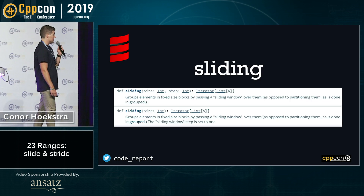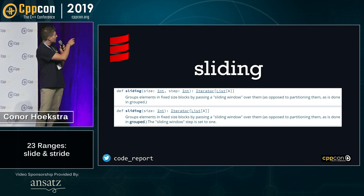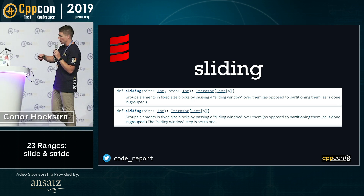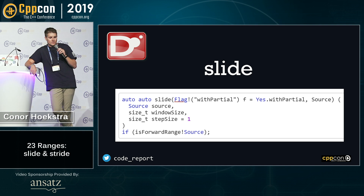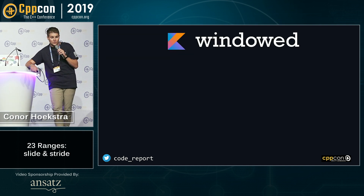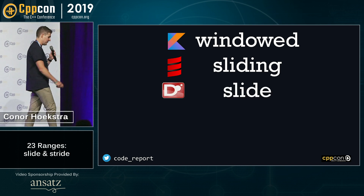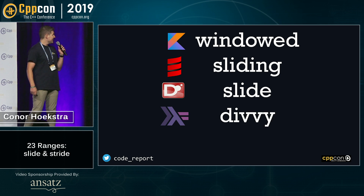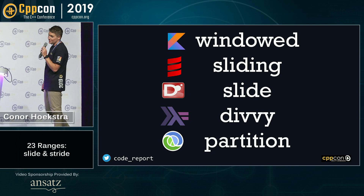In Scala, this is called sliding. Note that the default step is not equal to one — there's an overloaded version of sliding that just takes a single integer with the step hard-coded to one. In DLang, or D, this algorithm is called slide, with parameters called window size and step size. So Kotlin calls this windowed, Scala calls this sliding, D calls this slide, Haskell calls this Divi — I don't know why — and very unfortunately, Clojure calls this partition.